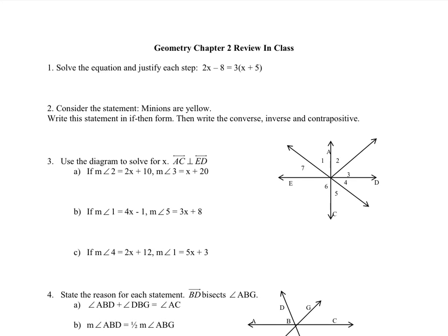We're going to make a T-chart out of this. We've got our statements and we've got our reasons. The first thing you always put is the given: 2x minus 8 equals 3 times x plus 5. And this is our given.